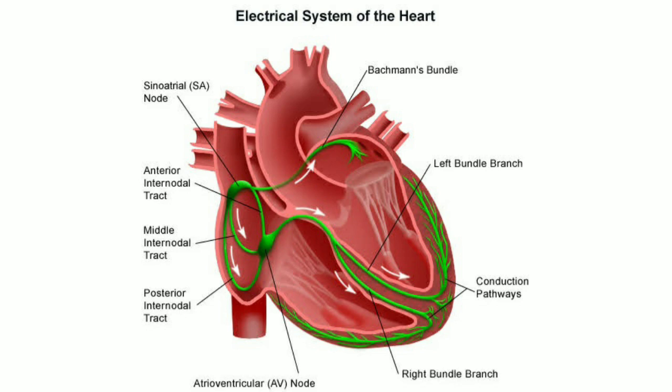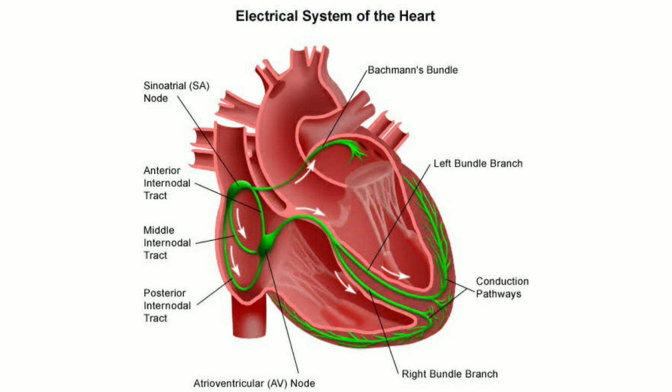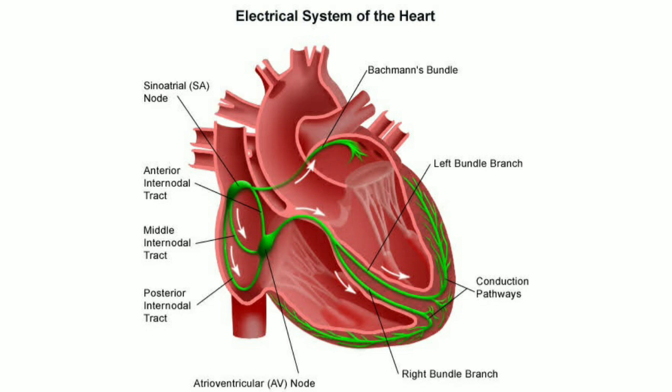The cardiac electrical activity passes through a conduction system starting from the SA node, which is the sinoatrial node, located in the right atrium near where the superior and inferior vena cava enter it. The sinoatrial node automatically triggers impulses at a rate of 60 to 100 beats per minute, with an average around 72 — this is the normal heart rate.